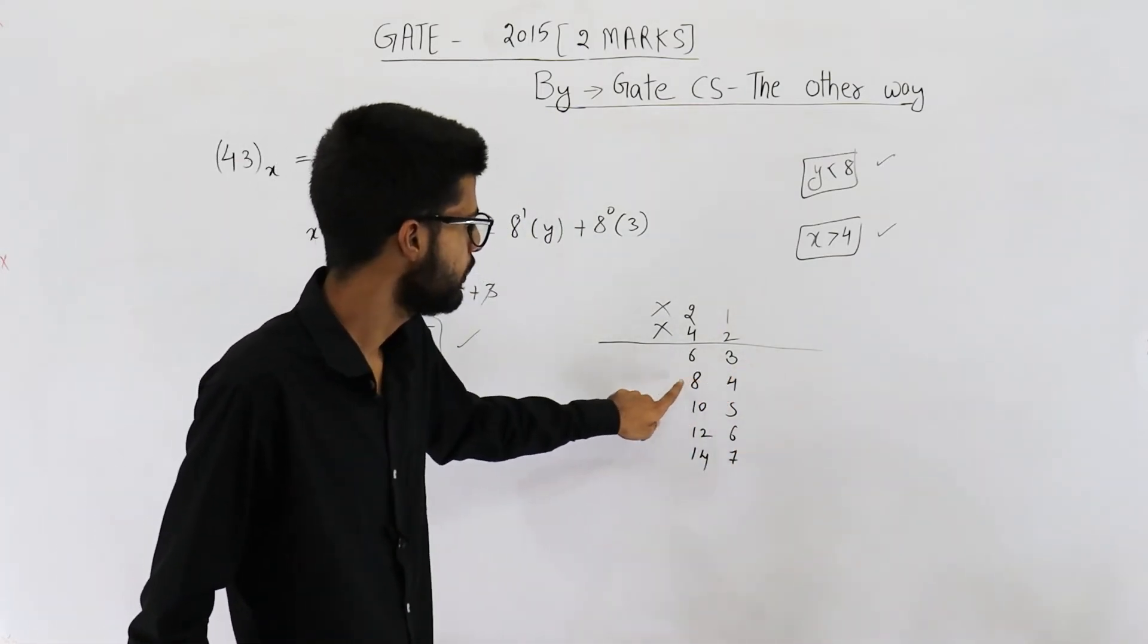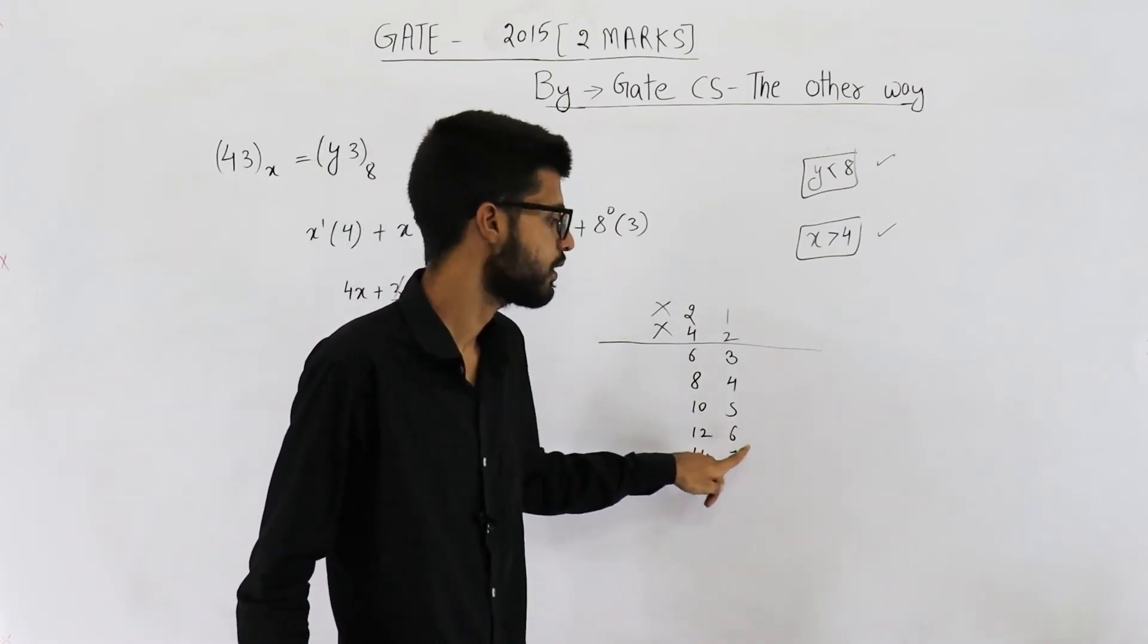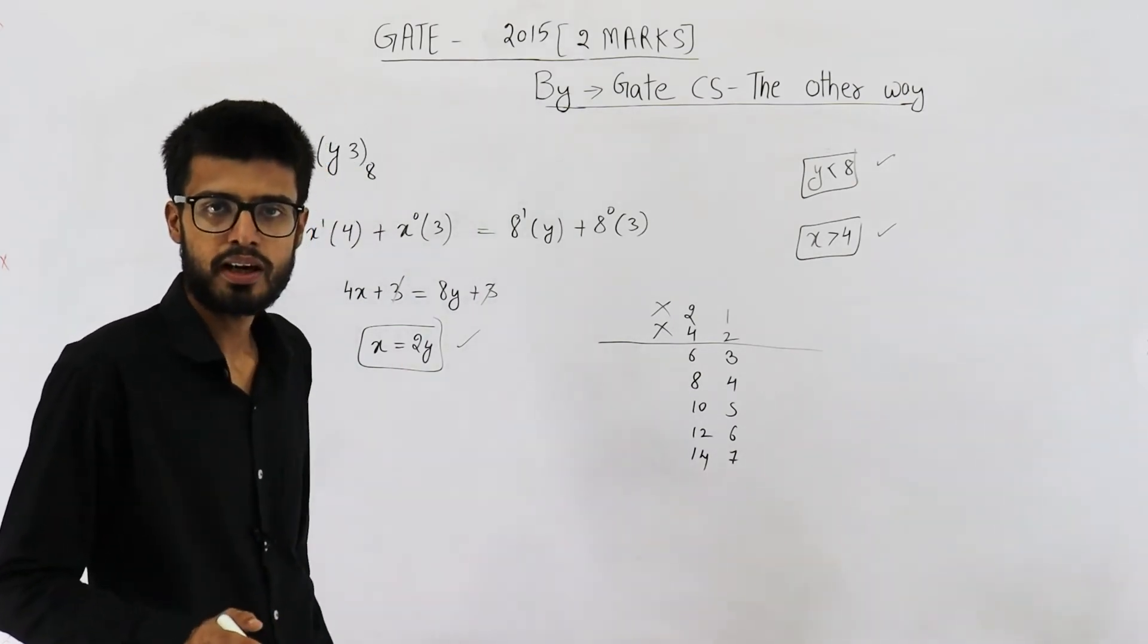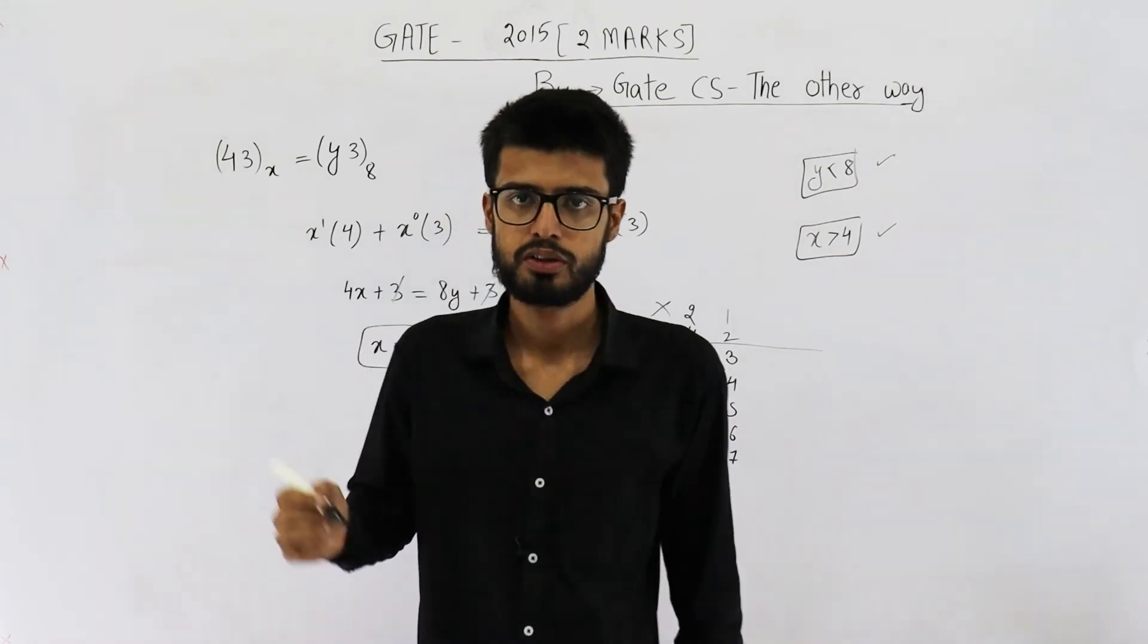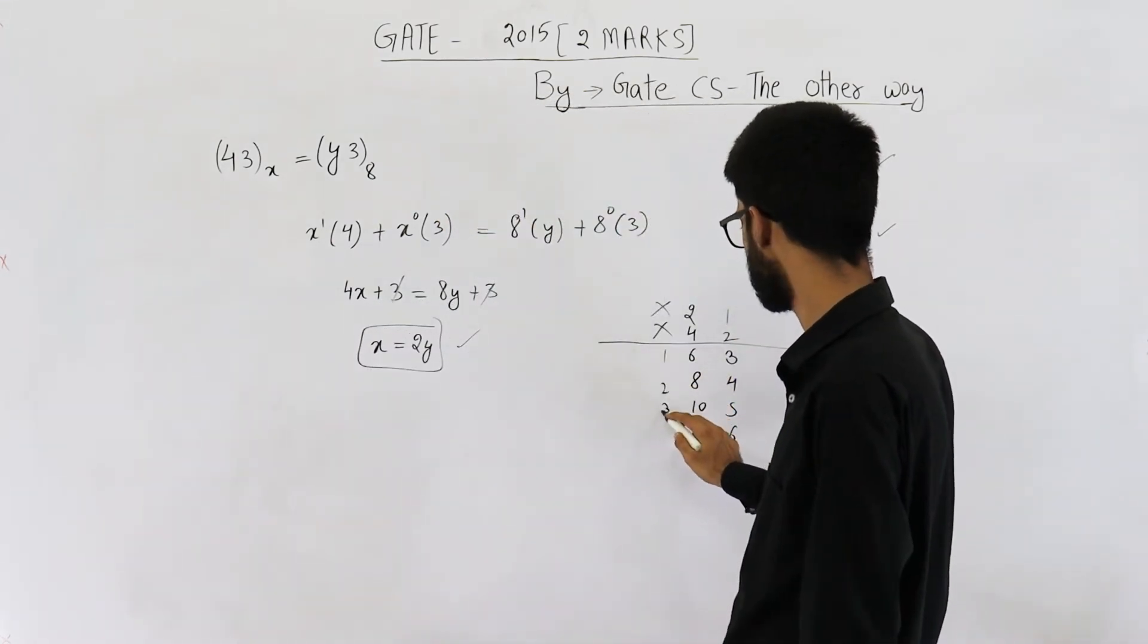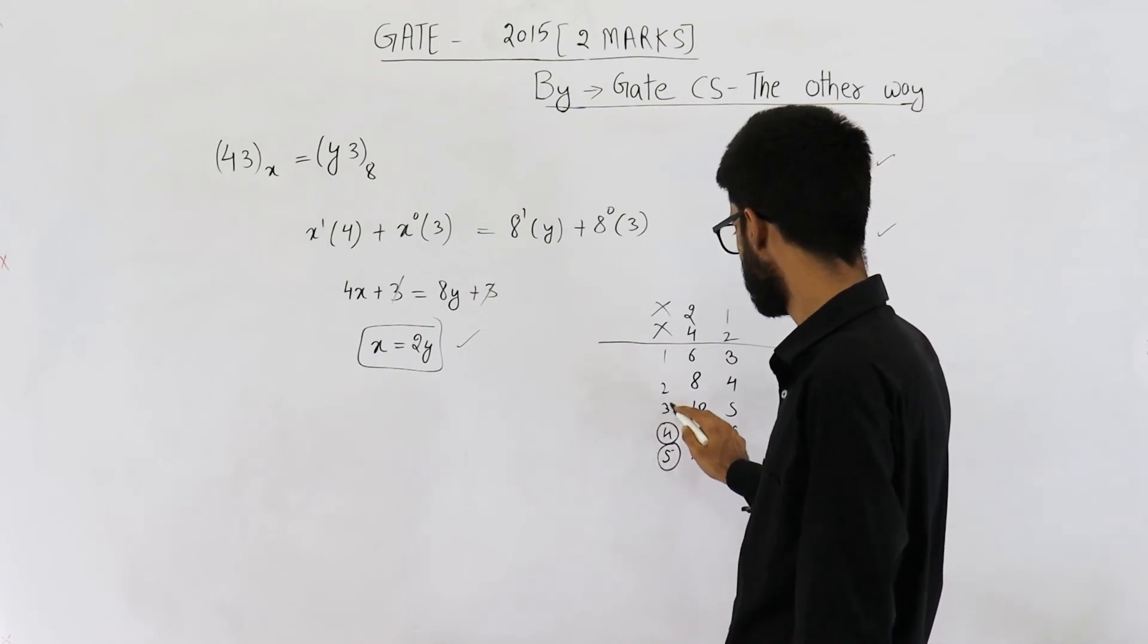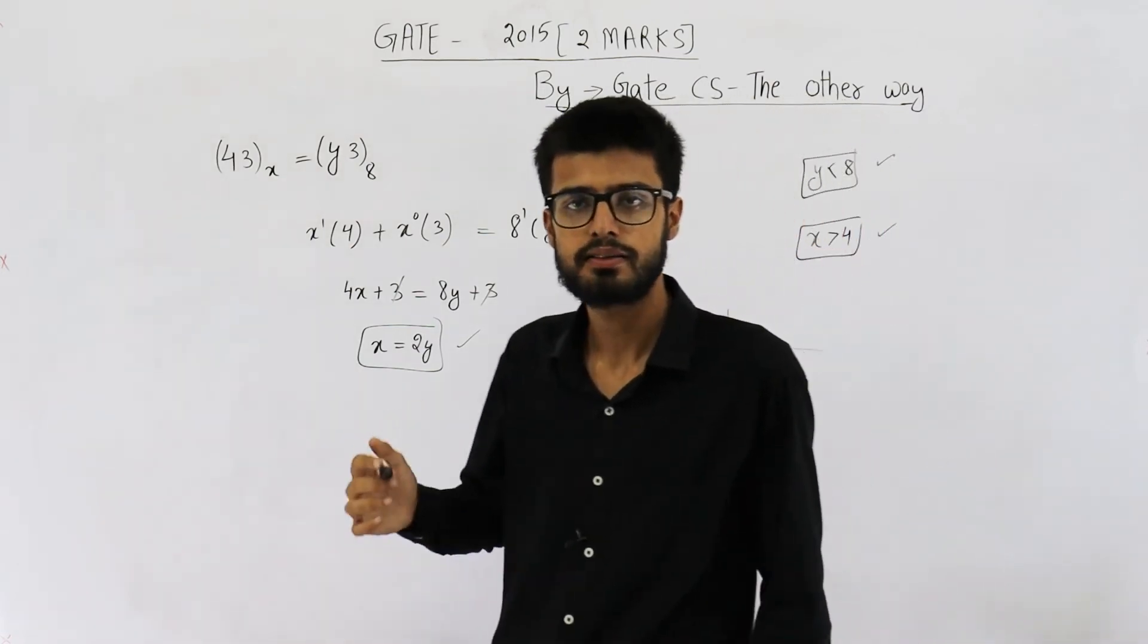It is 6, 3, 8, 4, 10, 5, 12, 6, 14, 7. These are the possible values that x and y can take. The question is, what is the total number of solutions for this equation? So we have 1, 2, 3, 4 and 5. This equation has 5 solutions and hence, the answer is 5.